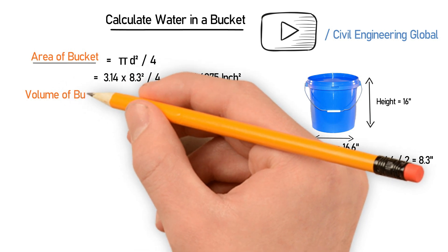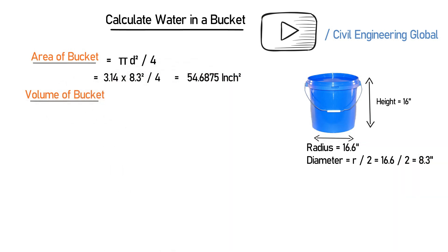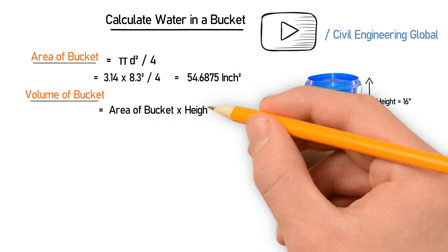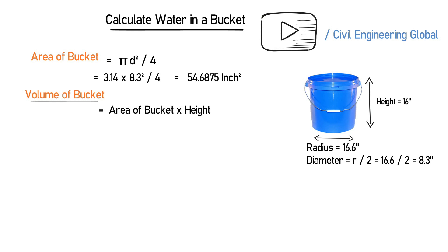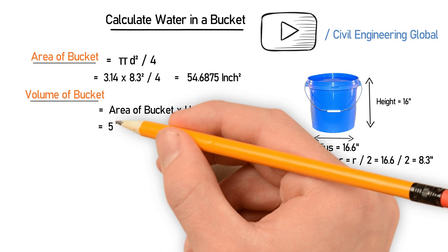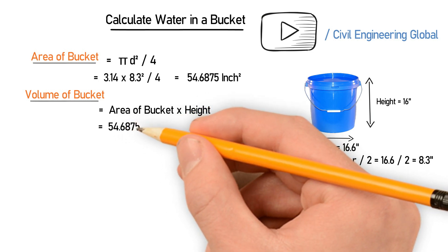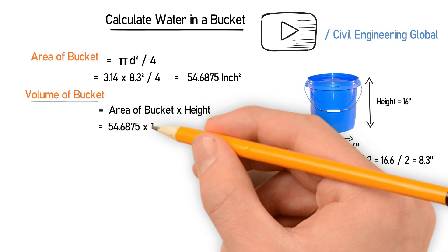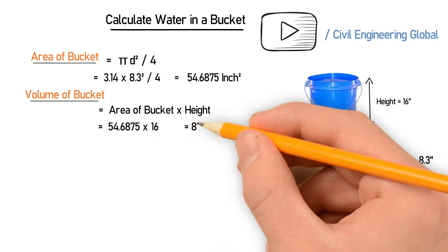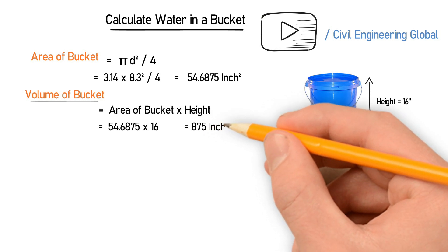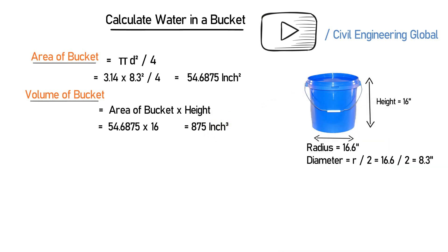After finding the area of the bucket, we will find the volume. The formula is: area of the bucket multiplied by height. So we multiply the area, 54.6875 square inches, by the height, which is 16 inches. This gives us 875 cubic inches — the volume of the bucket.